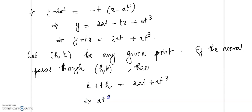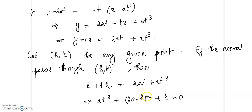If the normal passes through (h, k), substituting gives k plus th equal to 2at plus at³, which implies at³ plus (2a minus h)t plus k equal to 0. This is a cubic equation in t, and a cubic equation has 3 roots. Corresponding to the 3 roots, we get 3 equations for the normal, so therefore there will be 3 normals which can be drawn through a given point.